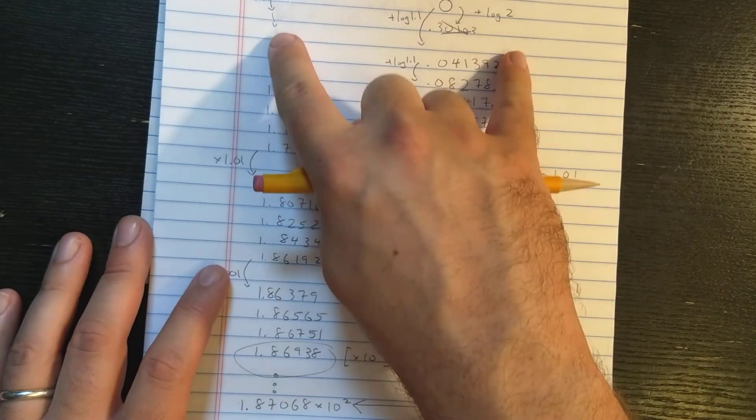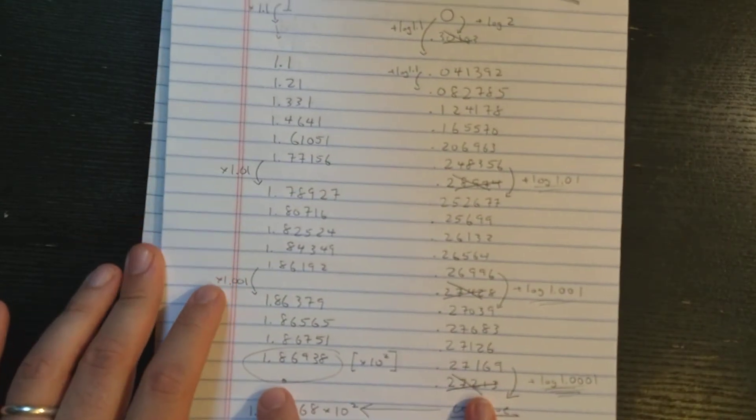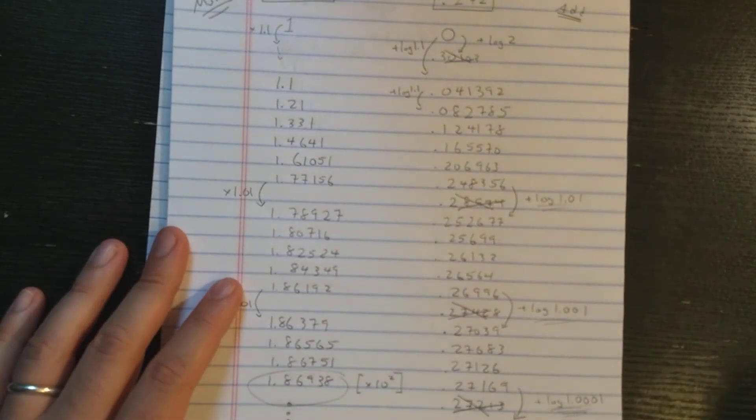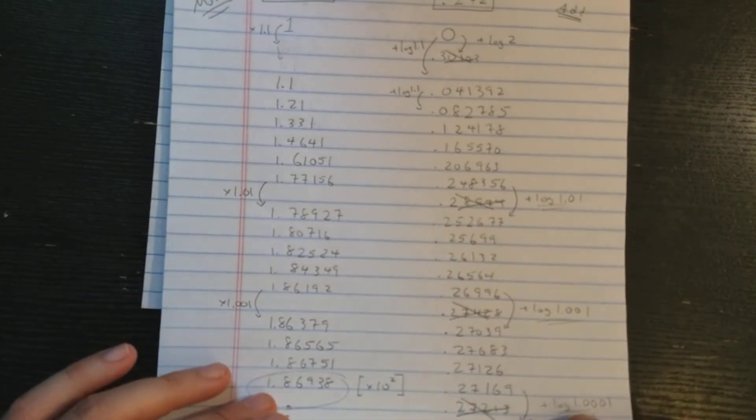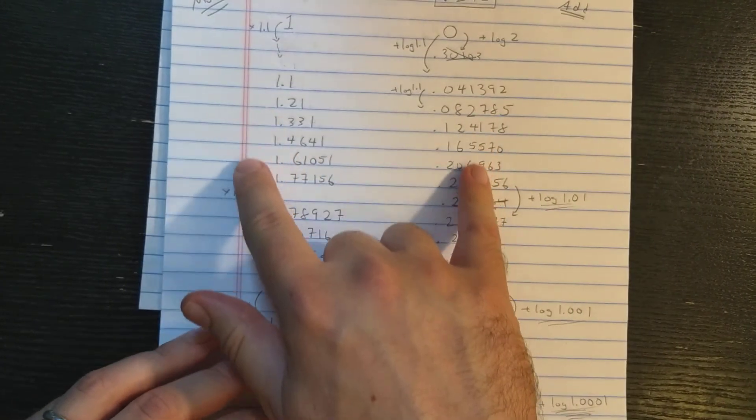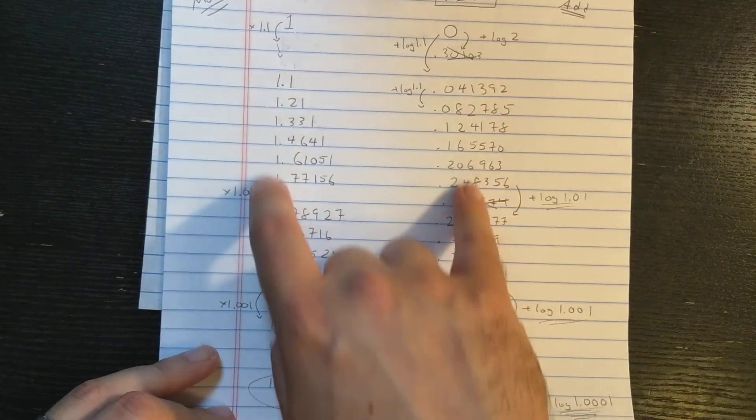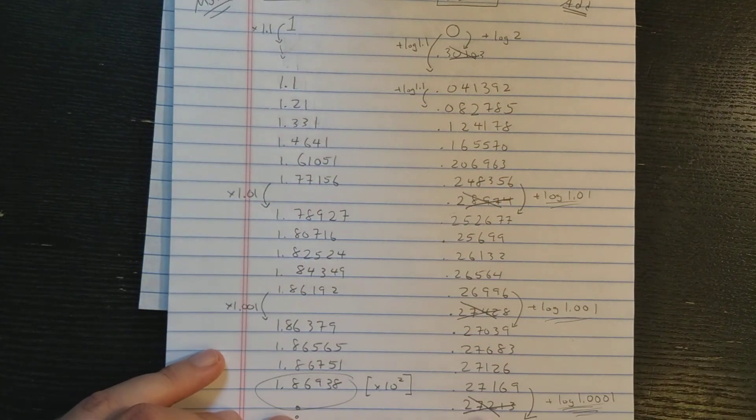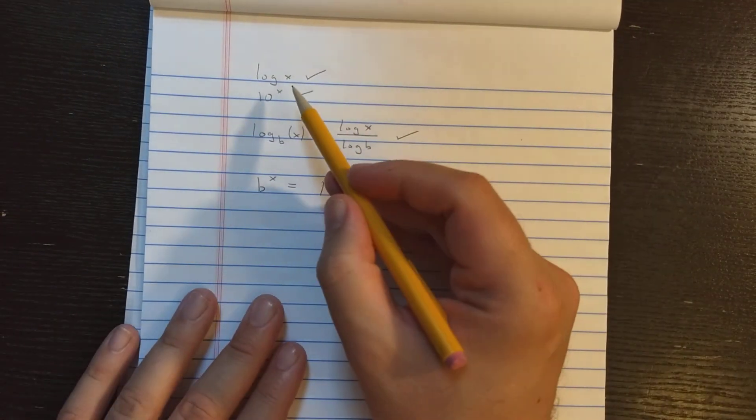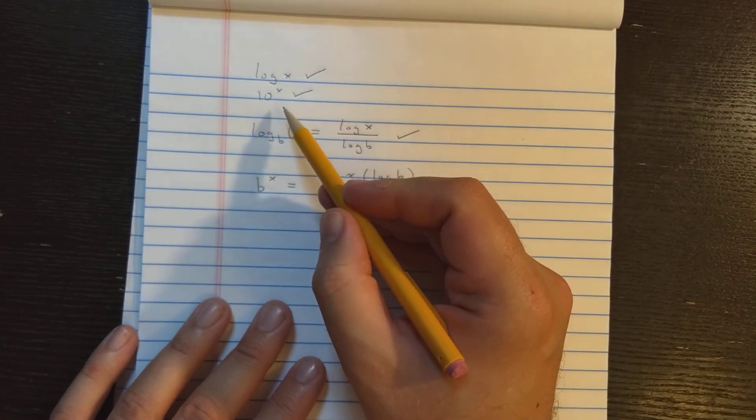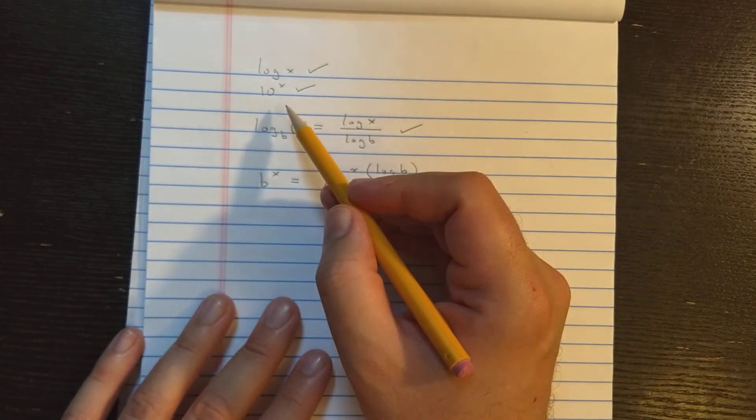So now you've seen that essentially the same algorithm can be used to reverse the original procedure. If you're clever, you could see how a very similar algorithm could be used to carry out regular multiplication or division. And some calculators implement multiplication and division in that manner.